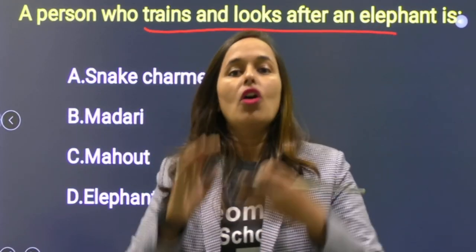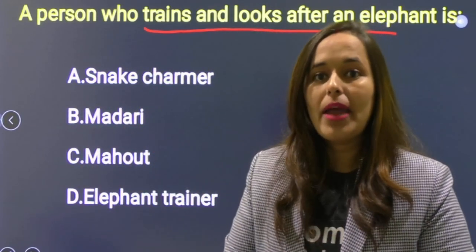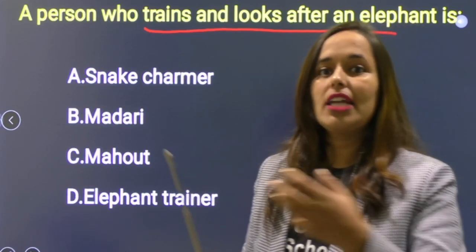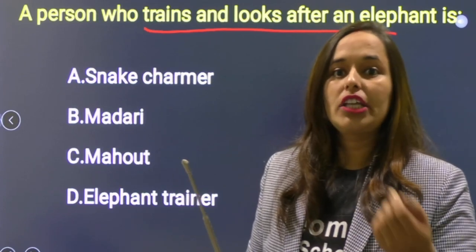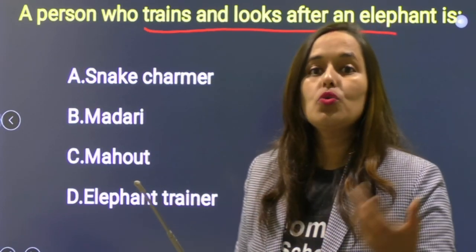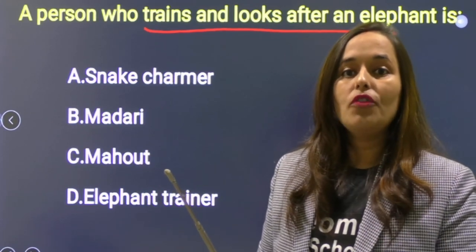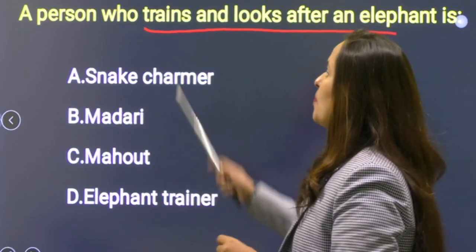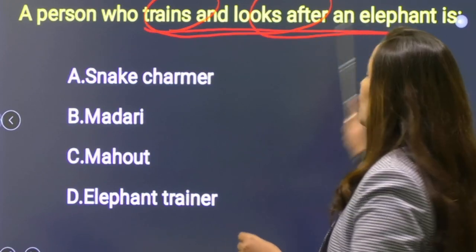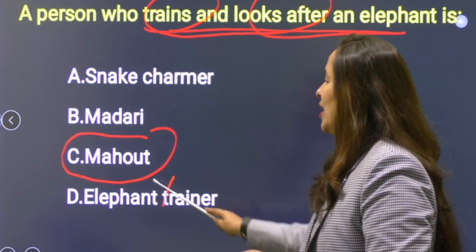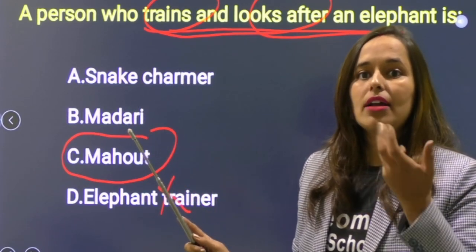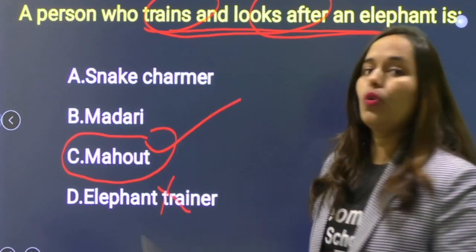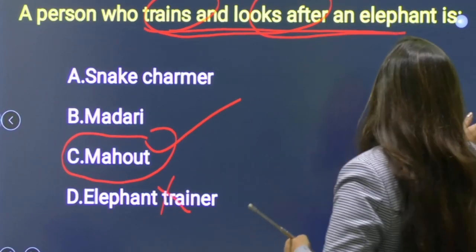Next: A person who trains and looks after an elephant is called? Relationship between animals and humans chapter से। Snake charmer जो bean बजाकर snake रखते हैं, madari जो gorilla, bear, monkey का खेल दिखाते हैं — इसी तरह elephant को train और look after करने वाले को mahout कहते हैं। Option C is correct.